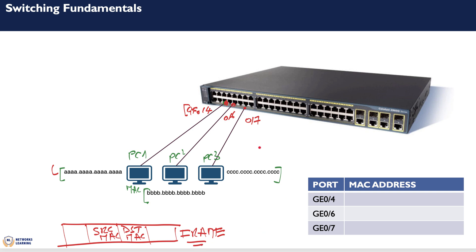This information from the frame is used by the switch to build its mapping. When the frame is received on gigabit 0/4, the switch identifies the MAC address of PC1 and knows it was received on gigabit 0/4, so it creates the mapping — all A's MAC address mapped to gigabit 0/4. Then it looks at the destination MAC address. It doesn't know what to do with it, so being a switch acting as a single broadcast domain, it broadcasts the frame out of all ports except the one it was received from — out of gigabit 0/6 and gigabit 0/7.